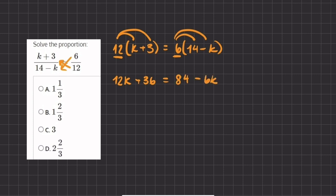Let's move all of our k's to the left-hand side, and all of our numbers to the right-hand side. We're going to add 6k to both sides, and we are going to subtract 36 on both sides. 12k plus 6k gives us 18k, and 84 minus 36 will give us 48.